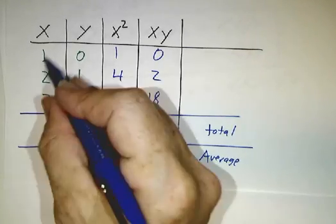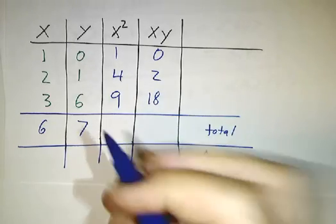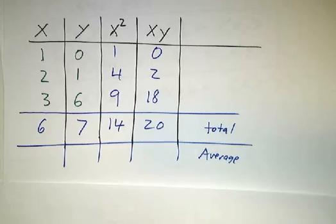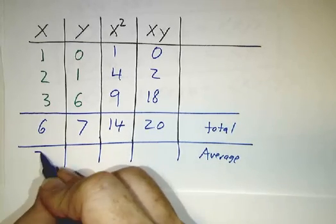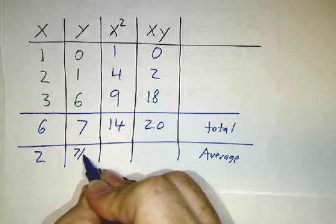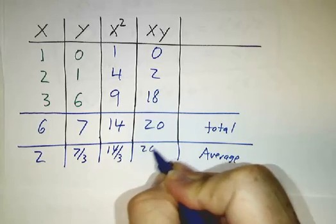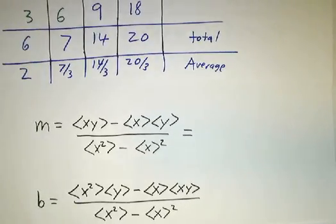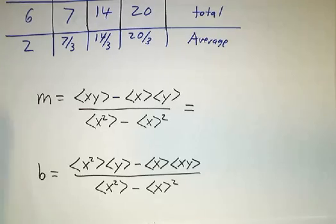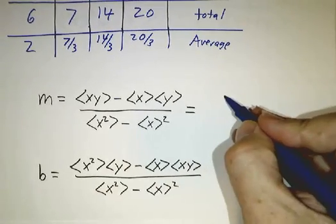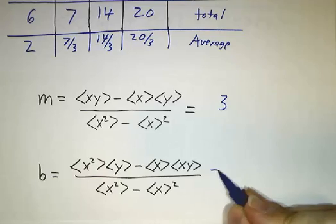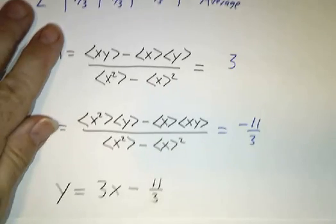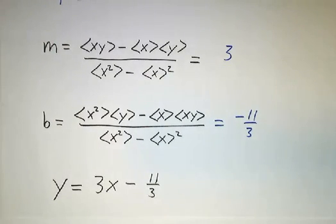And then if you add them up, 1 plus 2 plus 3 makes 6. This makes 7, this makes 14, this makes 20. And if you want your averages, well 6 divided by 3 is 2, 7 thirds, 14 thirds, 20 thirds. And then we just plug in our numbers. And I'll spare you the arithmetic. When you plug this in, you get 3. When you plug this in, you get negative 11 thirds. And our best line is y equals 3x minus 11 thirds.